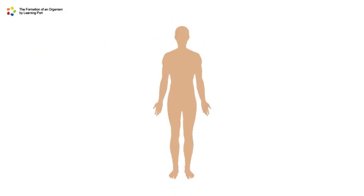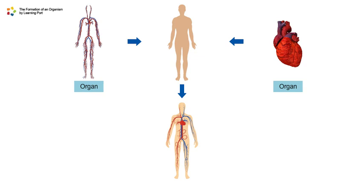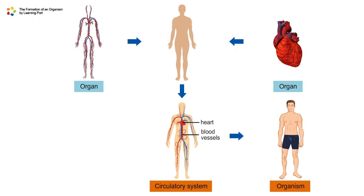In a multicellular organism such as humans, several organs work together to form a system. For example, the circulatory system consists of organs such as the heart and blood vessels. All systems work together to make up an organism.